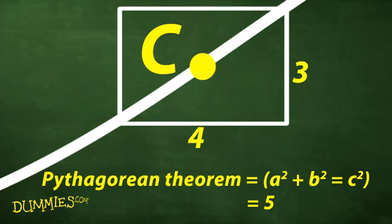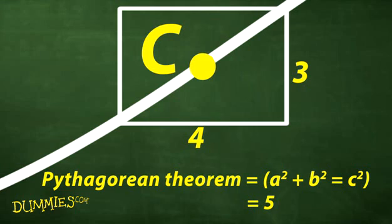To find the length of the curve from A to B, use the regular Pythagorean theorem from geometry: A squared plus B squared equals C squared. Do the same thing for the other minute sections of the curve and add all the little lengths. In this case, you get 5.